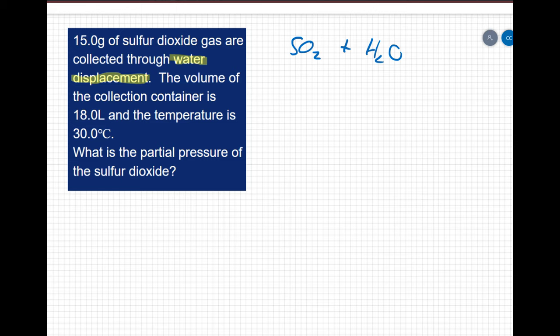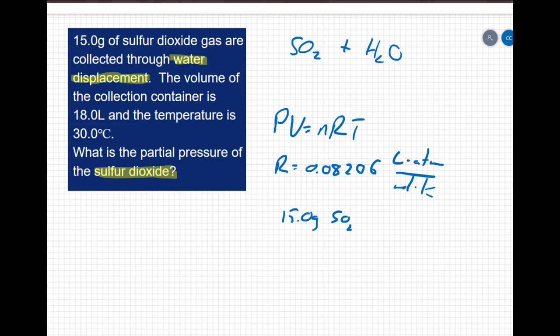This question is asking about sulfur dioxide, but if we're collecting by water displacement, we know that there's going to be water present as well. Fortunately here, all they're asking for is for the partial pressure of just the sulfur dioxide. I've got a mass, so I have an amount, I have a volume, and I have a temperature. So I can use my ideal gas law, PV equals nRT. R we remember is 0.08206 liters times atmospheres over moles times kelvin. So first things first, I see that my sulfur dioxide is in grams. So I have 15 grams of SO2. I need to convert that into moles. One mole is equivalent to 64.1 grams.